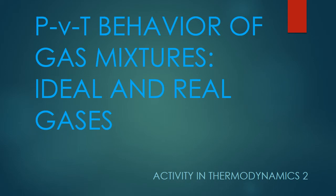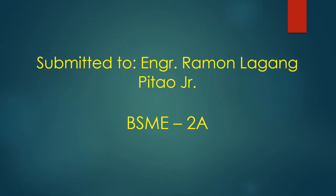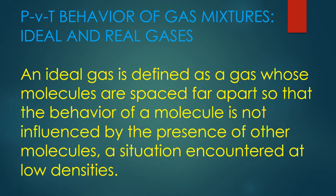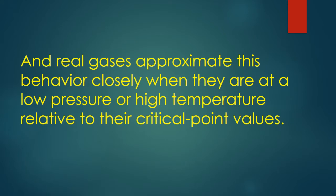This is a presentation on the topic: PVT behavior of gas mixtures — ideal and real gases in Thermodynamics 2. An ideal gas is defined as a gas whose molecules are spaced far apart so that the behavior of a molecule is not influenced by the presence of other molecules, a situation encountered at low densities. Real gases approximate this behavior closely when they are at low pressure or high temperature relative to their critical point values.